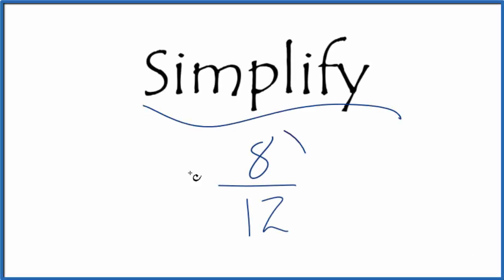Let's simplify the fraction 8 twelfths, and we want to get 8 over 12 to its simplest terms, or its lowest terms. To do that, we need to find a common factor, something that goes into both 8 and 12.